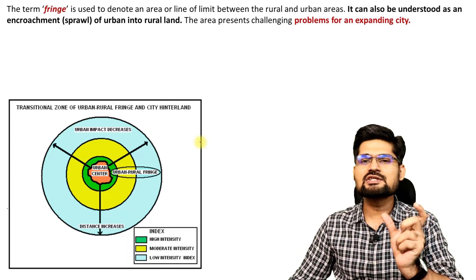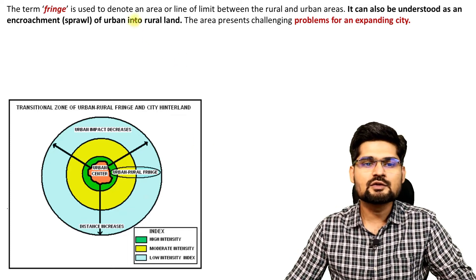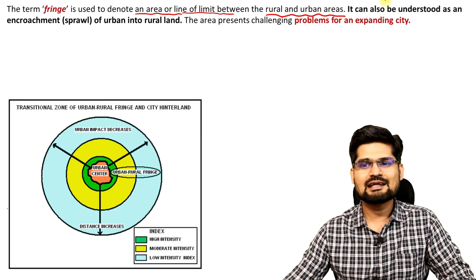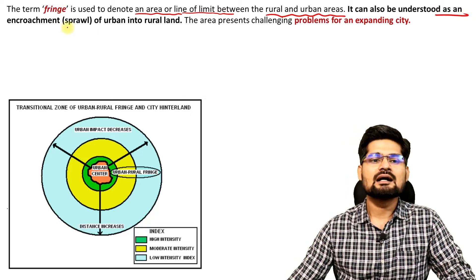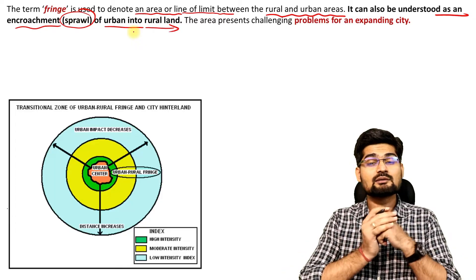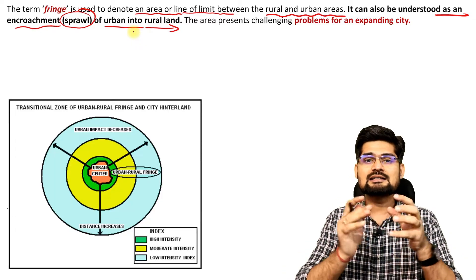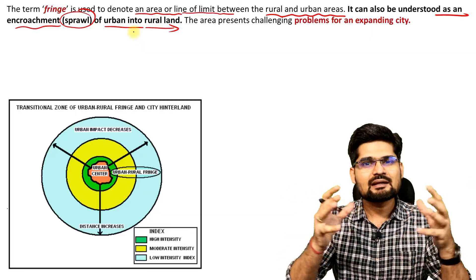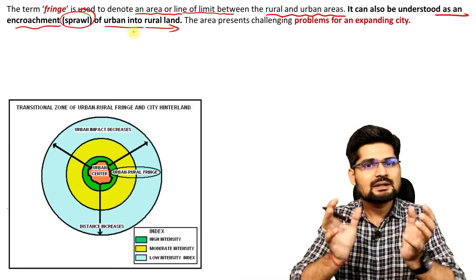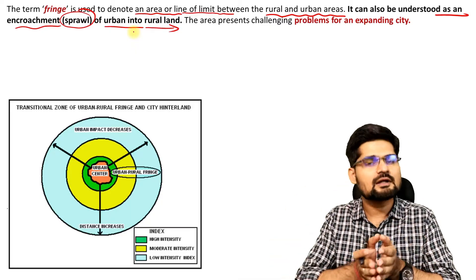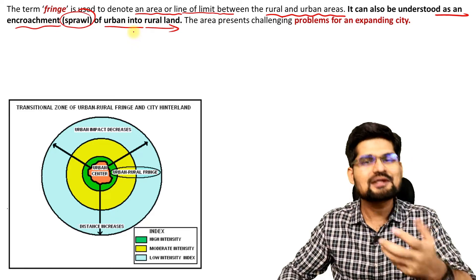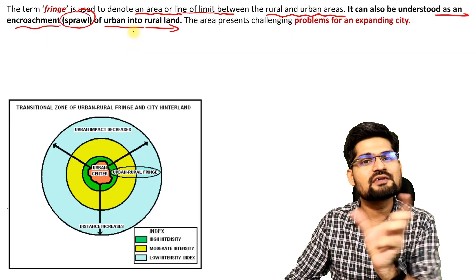The term fringe is used to denote an area or line of limit between rural and urban areas. It can also be understood as an encroachment or urban sprawl of urban land into rural land. This urban sprawl is a very important phenomenon as urbanization takes hold worldwide. Urban areas start to expand and eat away the nearby lands — nearby lands that are rural in category are now being covered by urban area. So there is a phase of transition where it's neither completely rural nor completely urban. That's where the fringe comes into the picture.